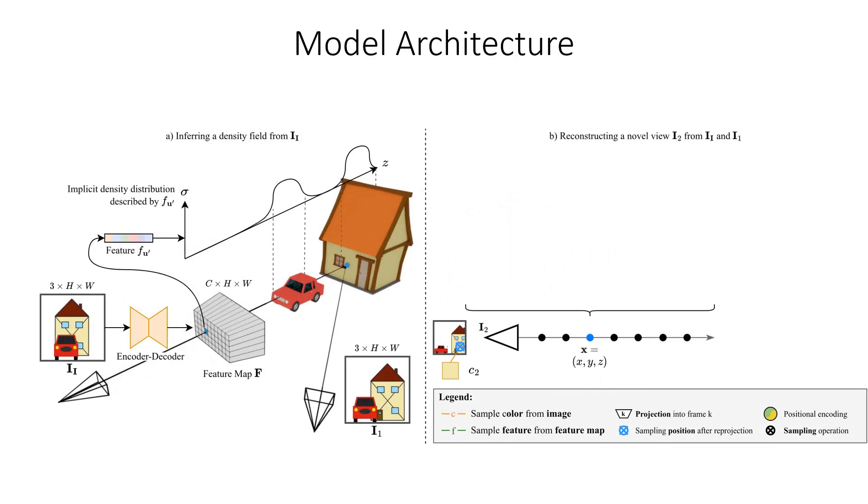In the second step, we perform volume rendering with ray casting. When considering a point X, we first reproject X onto the camera plane and sample the corresponding feature in the feature map. We then concatenate the feature with the positional encoding of the point coordinates and feed it into the small MLP. This small MLP finally outputs volumetric density sigma.